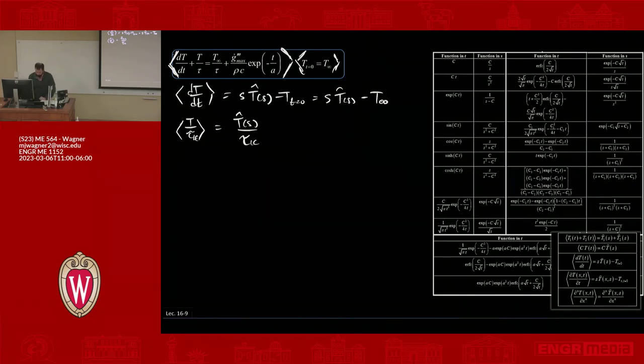Then the third term we have is T infinity over τ. Laplace of that is just—it's a constant, right? So it's T infinity over τ times 1/s. We decided Laplace of a constant is just that constant over s.